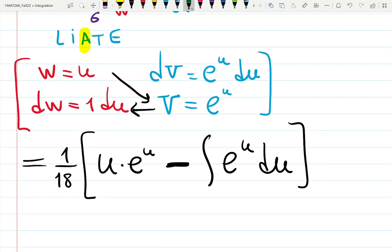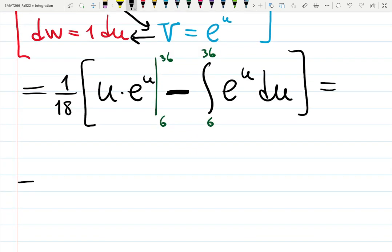See, recursiveness gives us a very easy integral, just e to the u. What is missing? Borders. Exactly, limits of integration: a bar from 6 to 36, and an integral from 6 to 36. The first part is ready—you just plug in 36 and 6. The second part needs to be integrated.